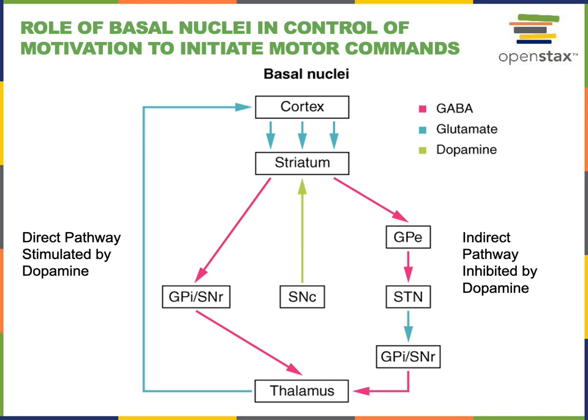There is a region of the midbrain called the substantia nigra pars compacta that produces dopamine and releases it into the striatum. Dopamine has a modulatory effect in the striatum: it increases activity through the direct pathway and decreases activity through the indirect pathway. Therefore, dopamine stimulates the direct pathway as a way of increasing the motivation to initiate motor commands.